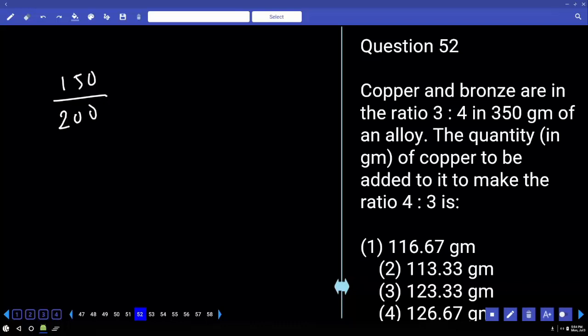Read the next thing. The quantity of copper to be added. Let x grams of copper is added. Then the ratio is becoming 4 is to 3. 4 by 3. 450 plus 3x is equal to 800. Right? 3x is equal to 350. x is equal to 133. 116.67.